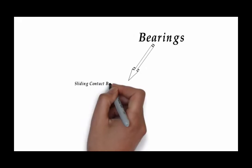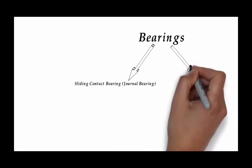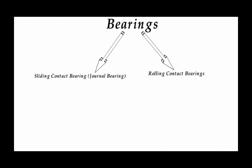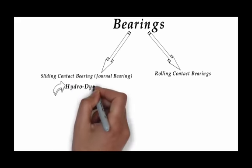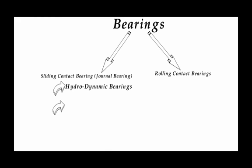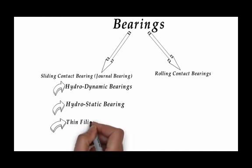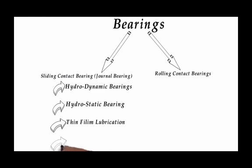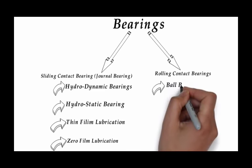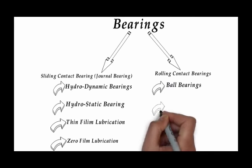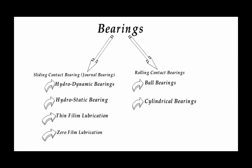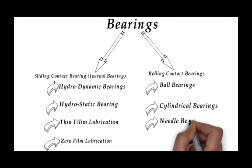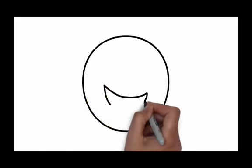In summary, bearings are classified into two main categories: sliding contact bearings, also known as journal bearings, and rolling contact bearings. Within sliding contact bearings, we have hydrodynamic bearings, hydrostatic bearings, thin film lubrication, and zero film lubrication. Under rolling contact bearings, we have ball bearings, cylindrical roller bearings, and needle bearings. This is the total classification — the full family of bearings.